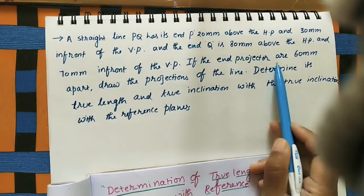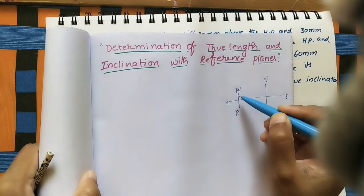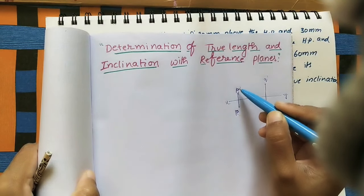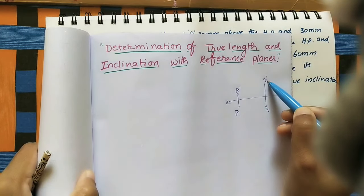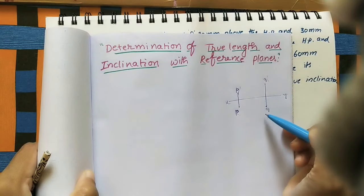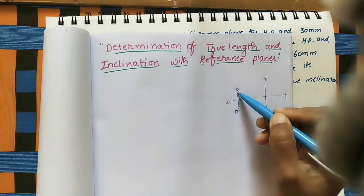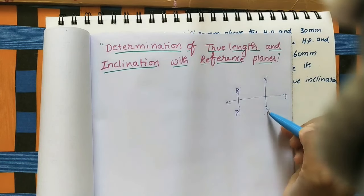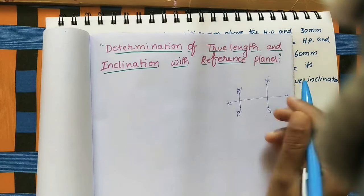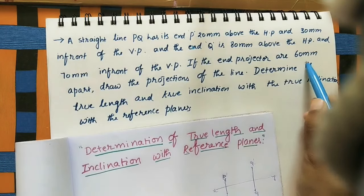The end projectors are 6 centimeters apart. For point P, in the front view it is P-dash, and in the top view it is small p. For Q, in the front view it is Q-dash, and in the top view it is small q. The line joining P-dash and p is called a projector, and the line joining Q-dash and q is also a projector. The distance between these two projectors is 6 centimeters.